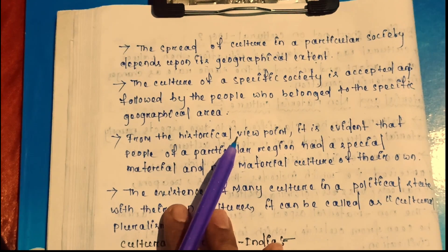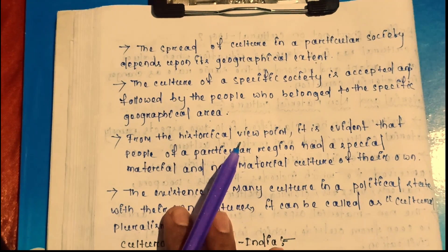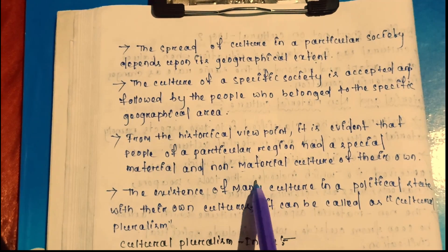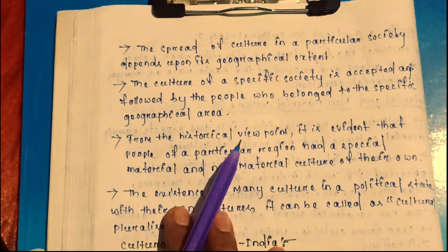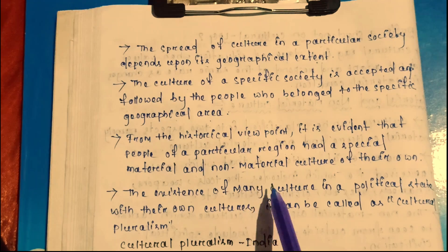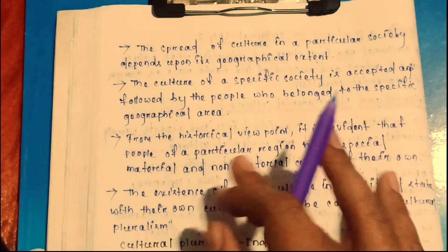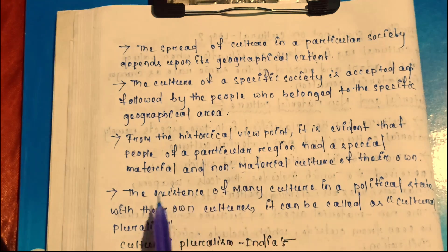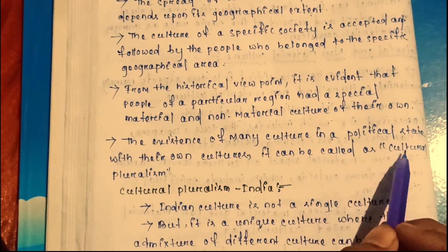In different regions there are different languages. The existence of many cultures in a political state, each with their own culture, can be called cultural pluralism. India, for example, is not a single culture but a unique culture where the admixture of different cultures can be seen.